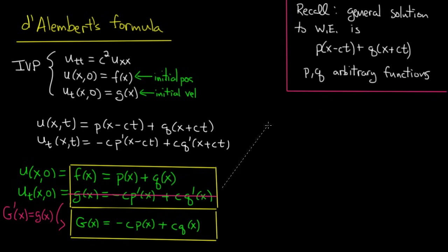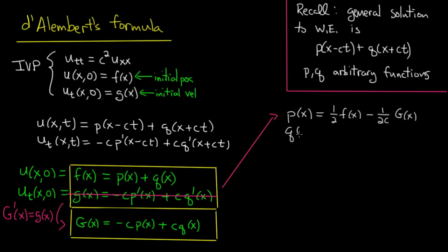Doing a little arithmetic — dividing the bottom equation by c and adding the two equations together — we find p of x equals one-half f of x minus one over 2c times capital G of x, and q of x equals one-half f of x plus one over 2c times capital G of x. Now we have p and q in terms of f and capital G. Since knowing p and q gives us u through the general solution formula, we've essentially solved our problem.